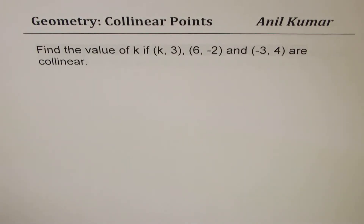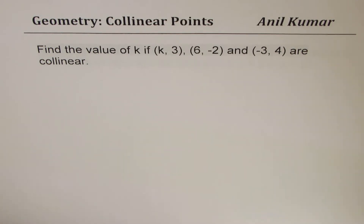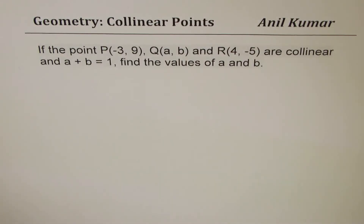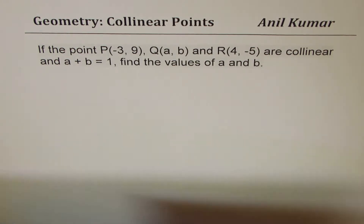The next question is: find the value of k if (k, 3), (6, -2), and (-3, 4) are collinear points. Then we'll take up: if P(x, y) is a point on a line segment joining points M and N, then prove that x + y = a + b. The last question is: if the points P(-3, 9), Q(a, b), and R(4, -5) are collinear and a + b = 1, find the values of a and b. These are the four questions which we are going to solve one by one.